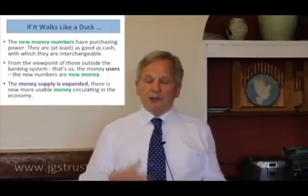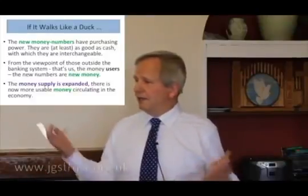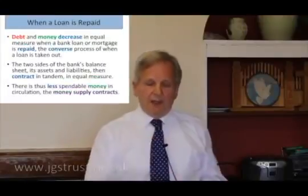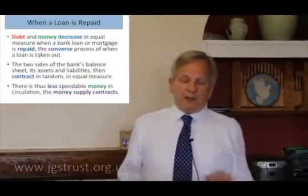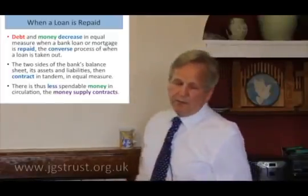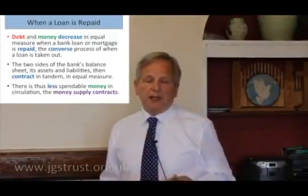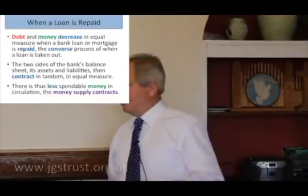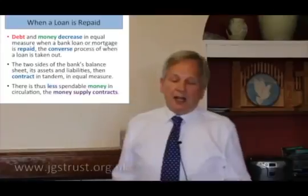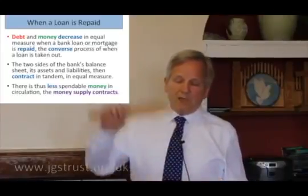The guy who sold you the house gets the 100,000 — he probably buys a new car with it, or goes on holiday, or whatever. Now there's a flip side to that expansion of the bank's balance sheet: when somebody comes along and repays their loan, pays money back to the bank, the money supply contracts.